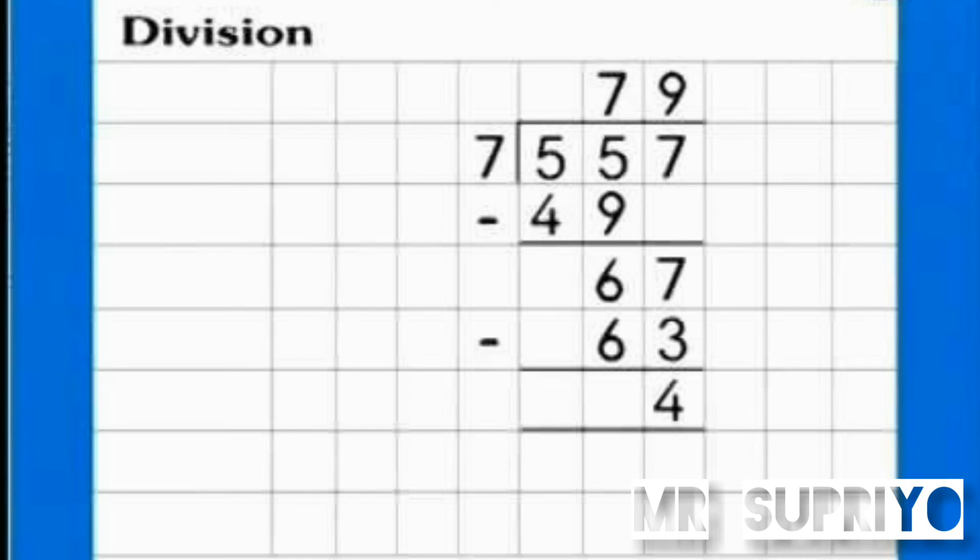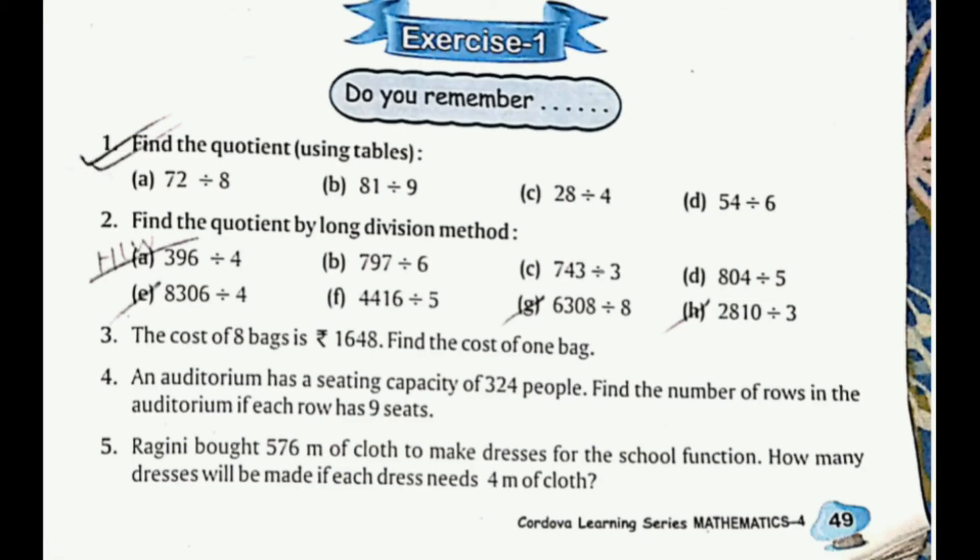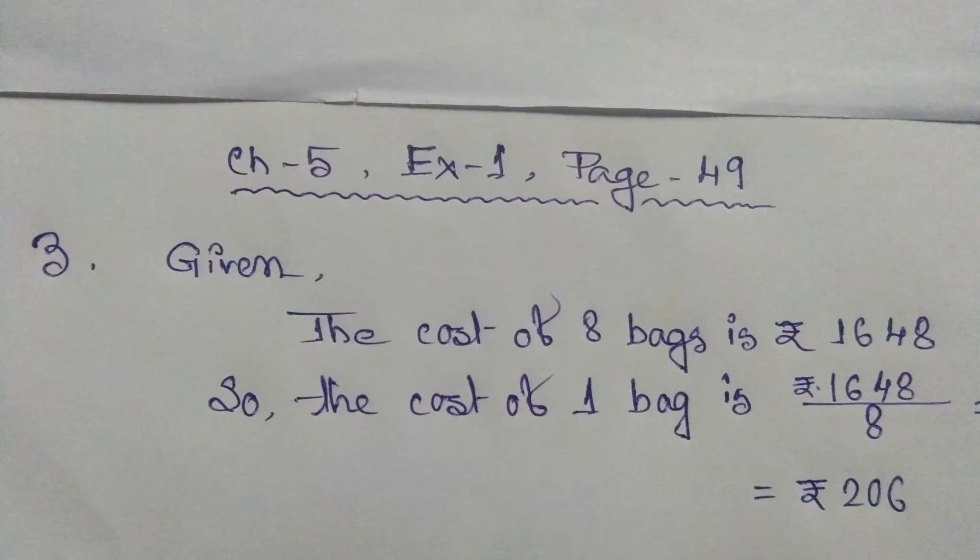Number 3: The cost of 8 bags is rupees 1648. Find the cost of one bag. Solution: Given the cost of 8 bags is rupees 1648, so the cost of one bag is rupees 1648 divided by 8, which equals rupees 206.